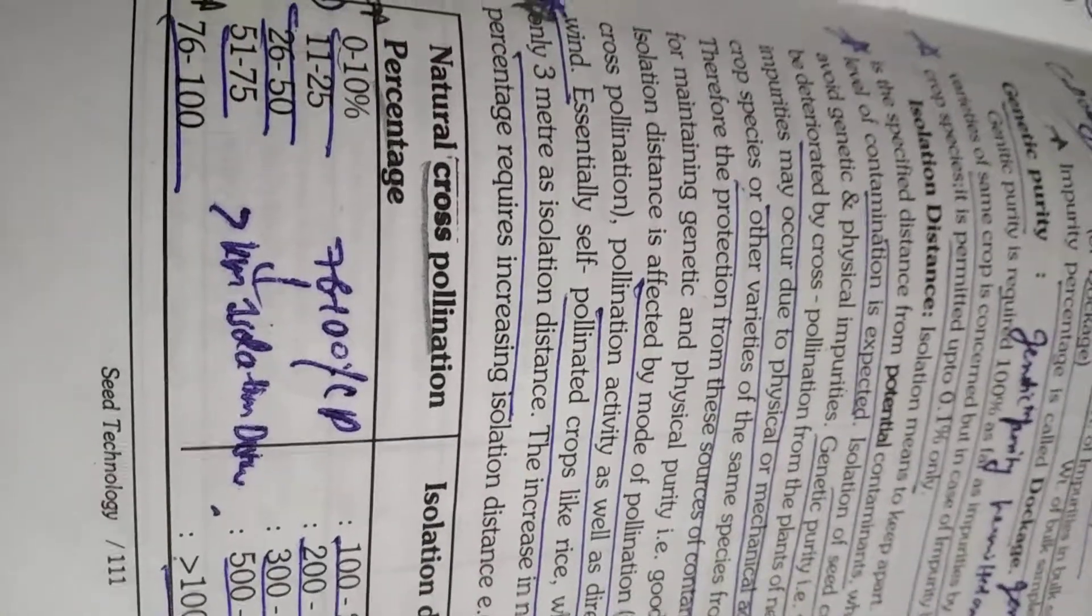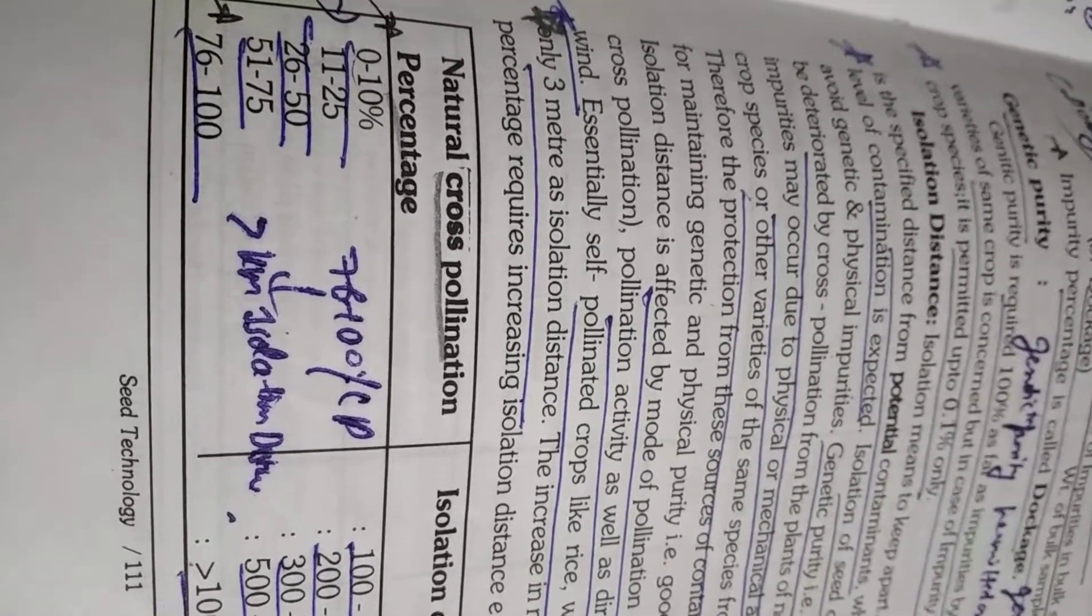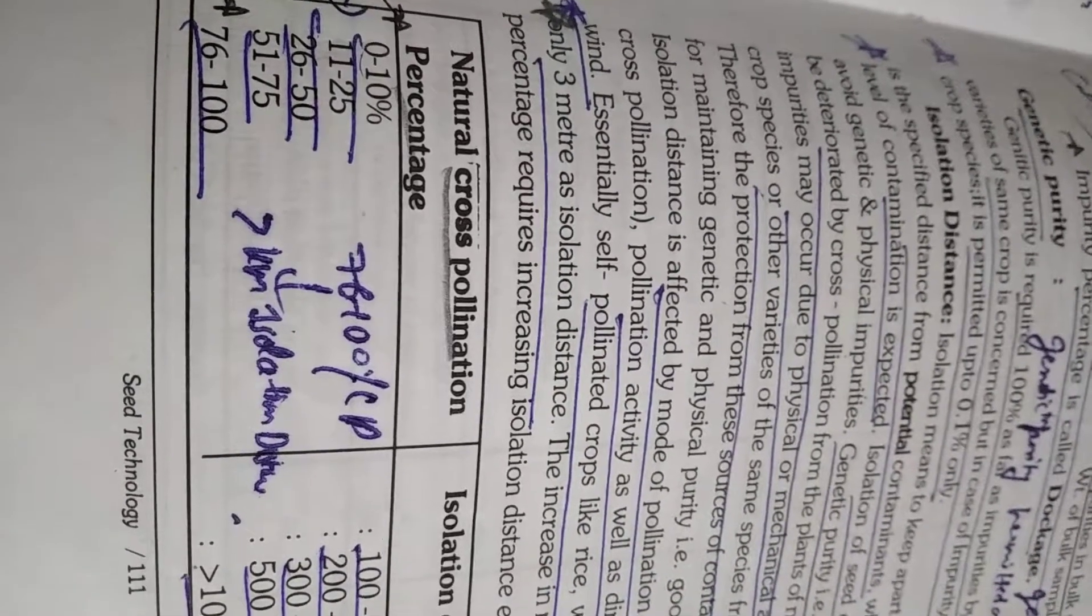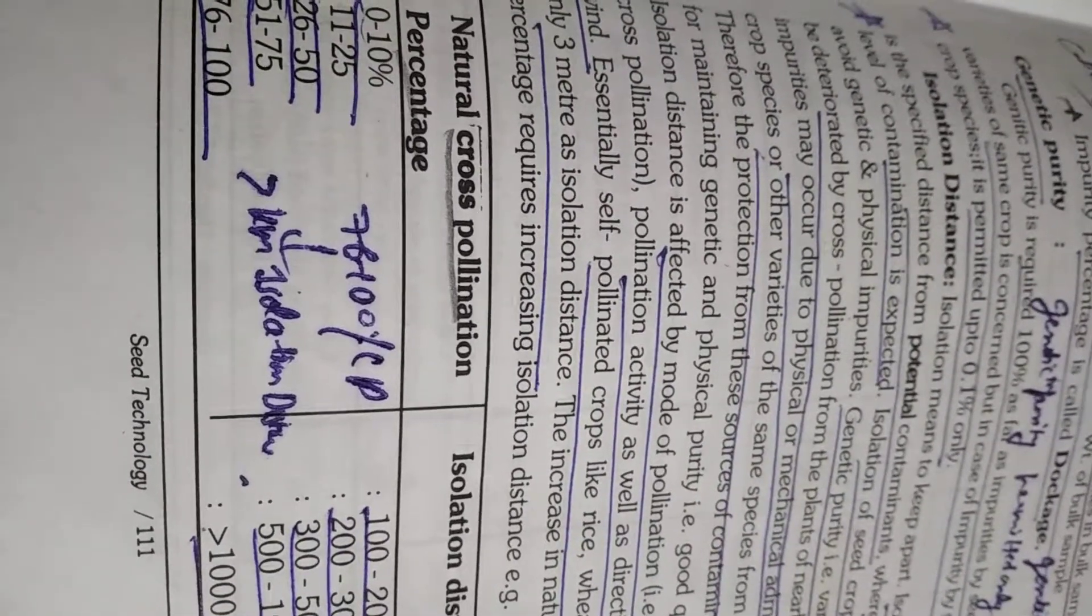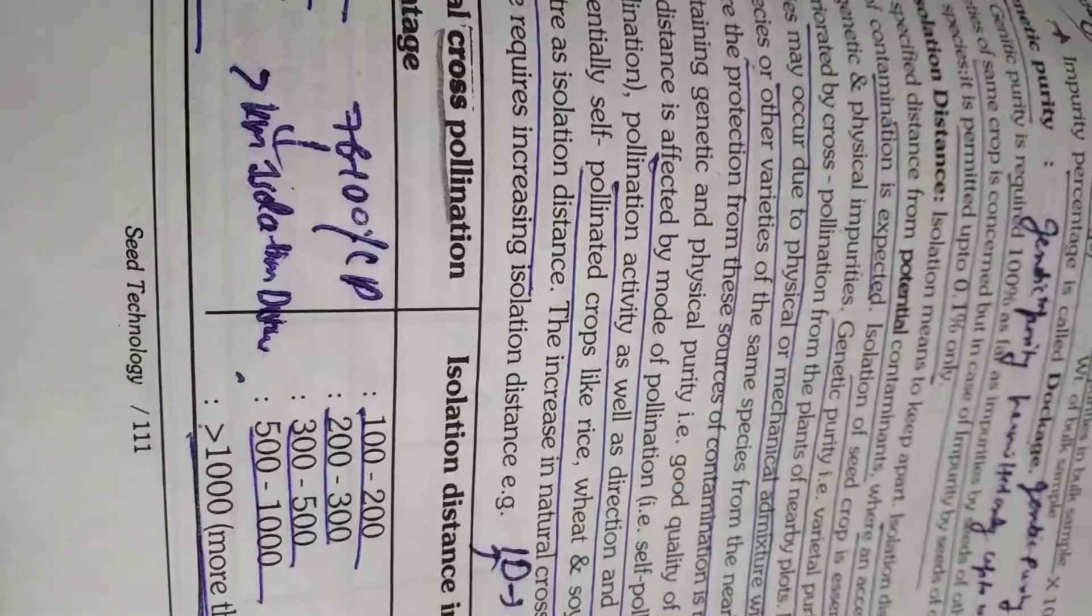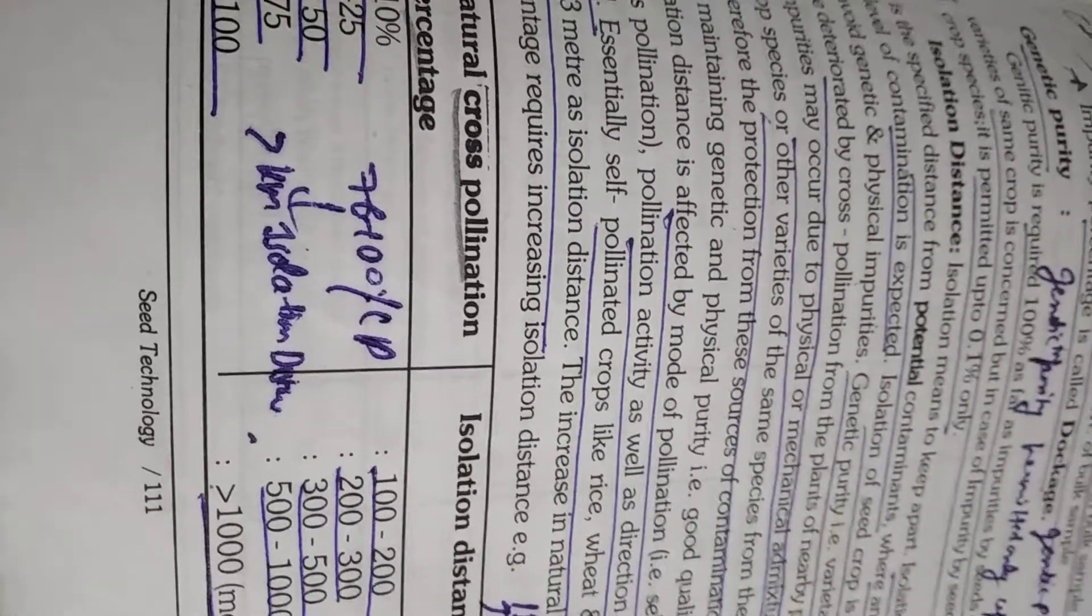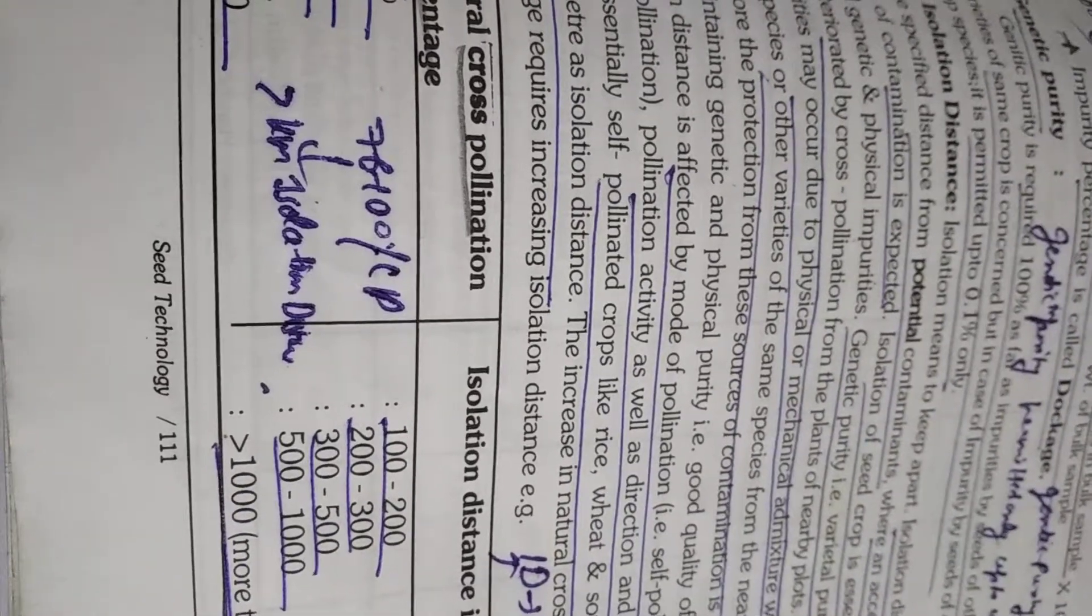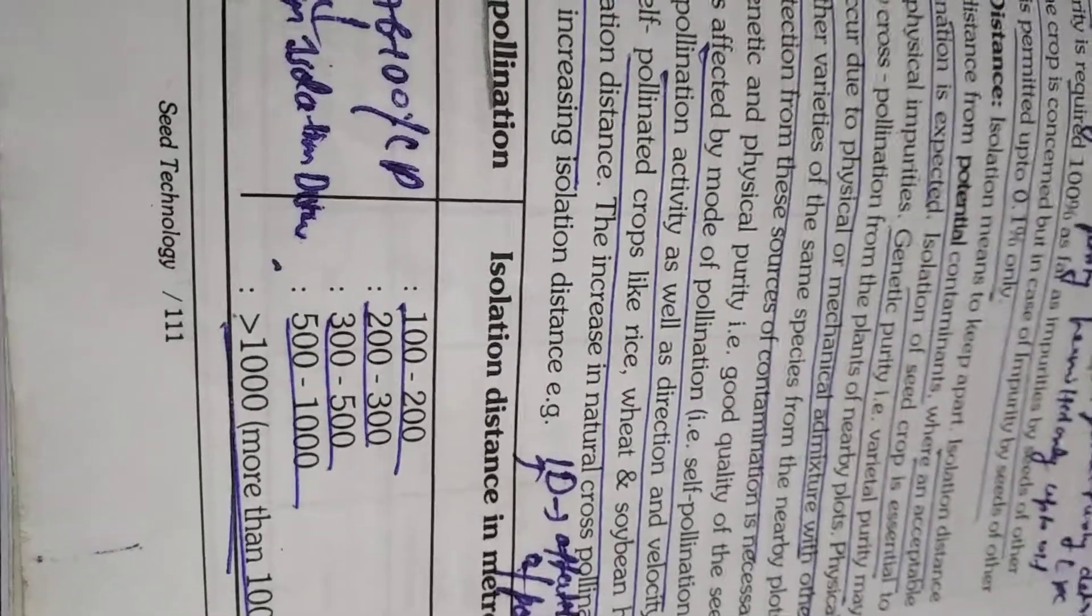Student please remember this table. Many questions are asked from it. Natural cross-pollination percentage is 0 to 10%, 11 to 25%, 26 to 50%, 51 to 75%, and 75 to 100%. If there is 0 to 10% natural cross-pollination percentage, isolation distance is 100 to 200. If 11 to 25% then 200 to 300. If 26 to 50% then isolation distance is 300 to 500. If 51 to 75%, the isolation distance is 500 to 1000. If 76 to 100% then the isolation distance is more than 1 km. Please remember it.